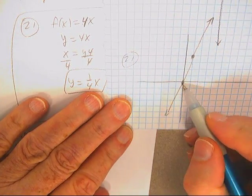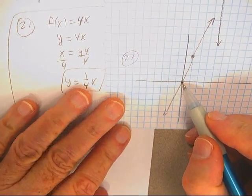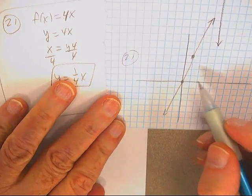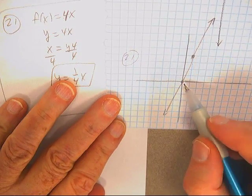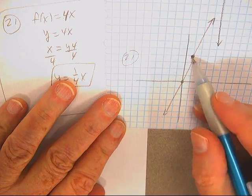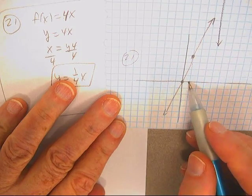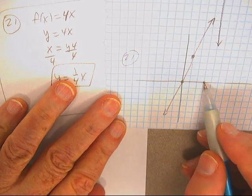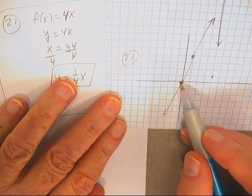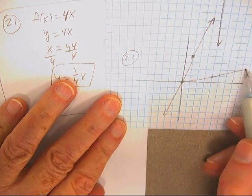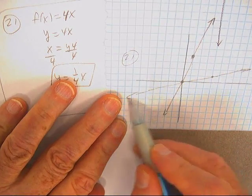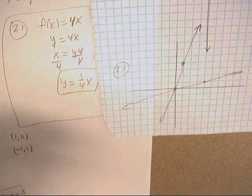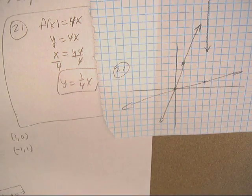If I reverse 0, 0, I get this one. If I reverse 1, 4, I get 4, 1. There they are graphed. Problem 21 is done, we'll be back.